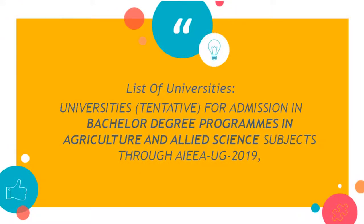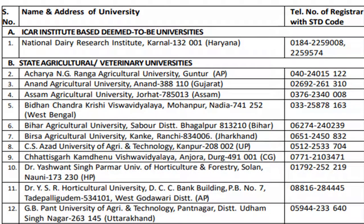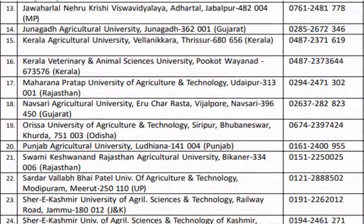List of Universities and Colleges for B.Tech and B.Sc in Agriculture. Universities tentative for admission in Bachelor Degree Programs in Agriculture and Allied Science subjects throughout EAUG 2019. Take a look at them, ask any doubt in the comments, and leave a like for the video.